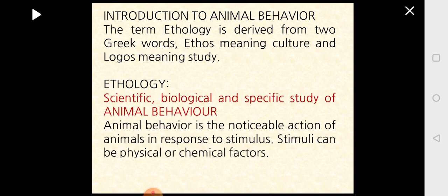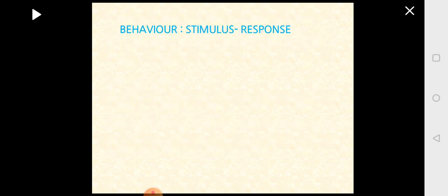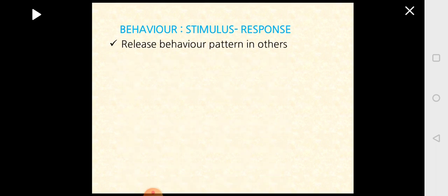When we say animal behavior, behavior means you should be able to identify some kind of change in an animal in response to a stimulus. A stimulus can be either physical, like light or sound, or a chemical factor like a pheromone. When an animal is exposed to any kind of stimulus, it will show some response to that stimuli. This response is called behavior.